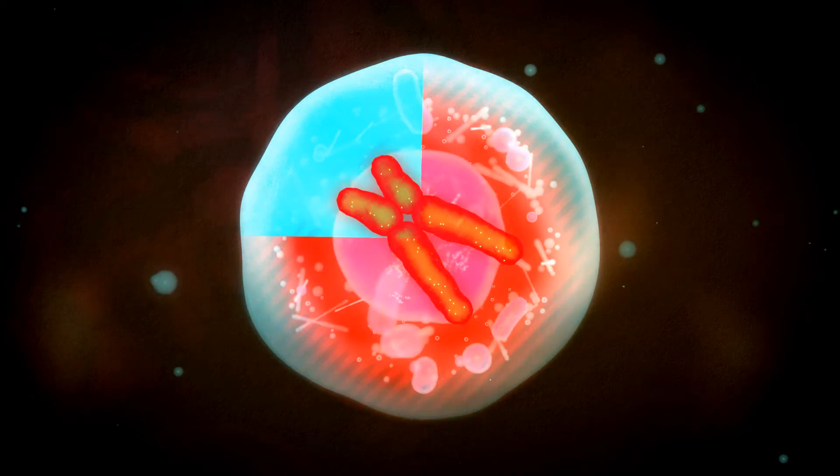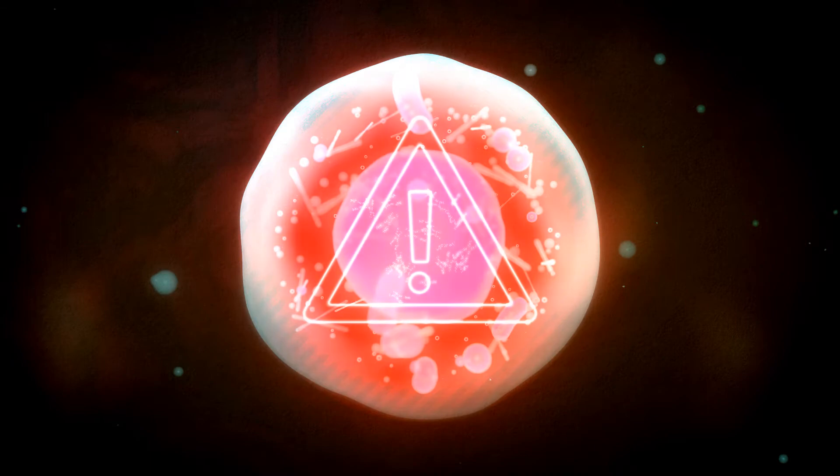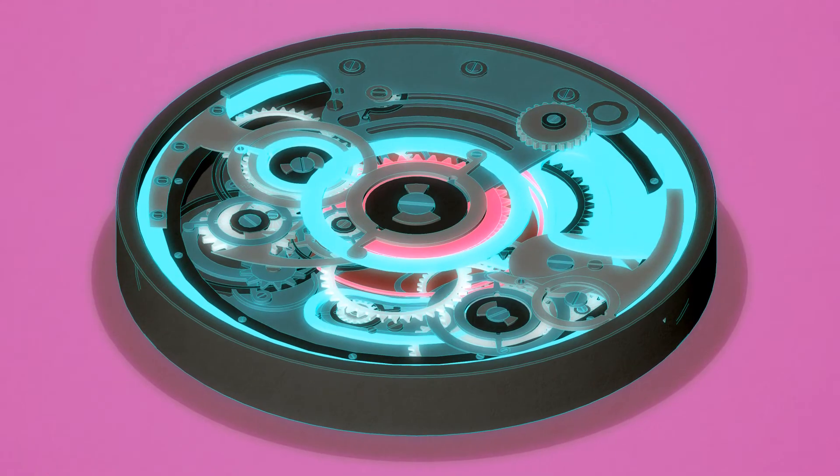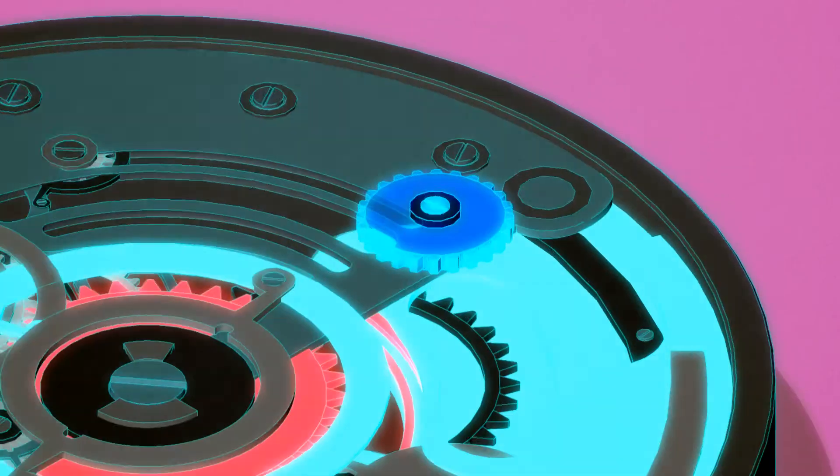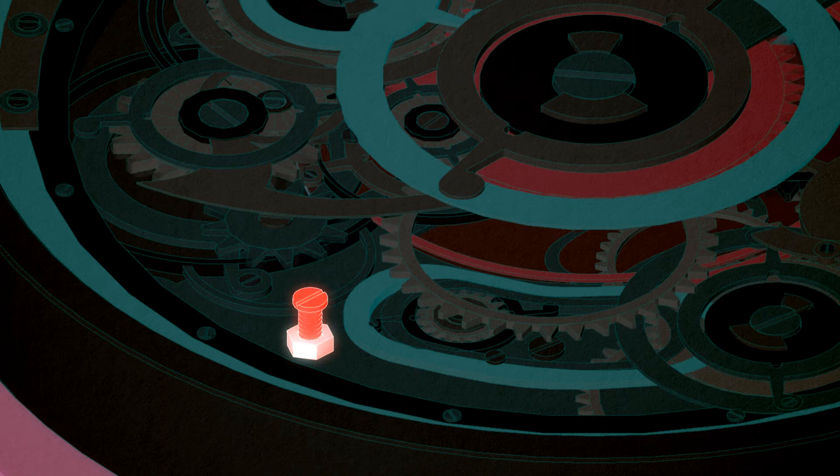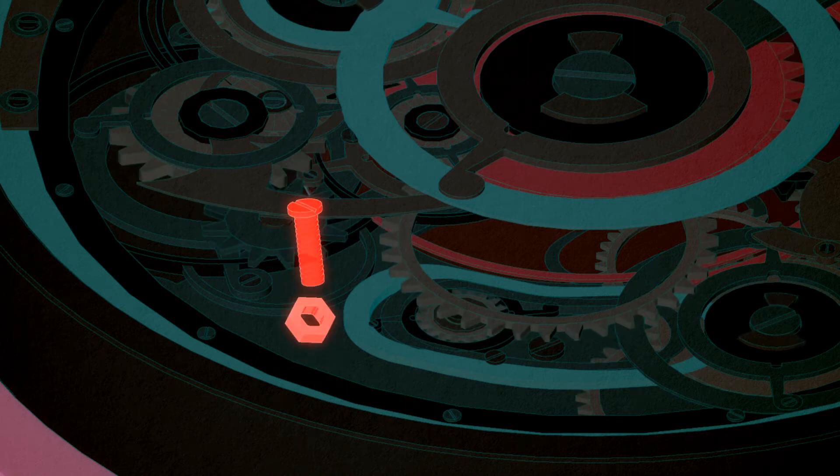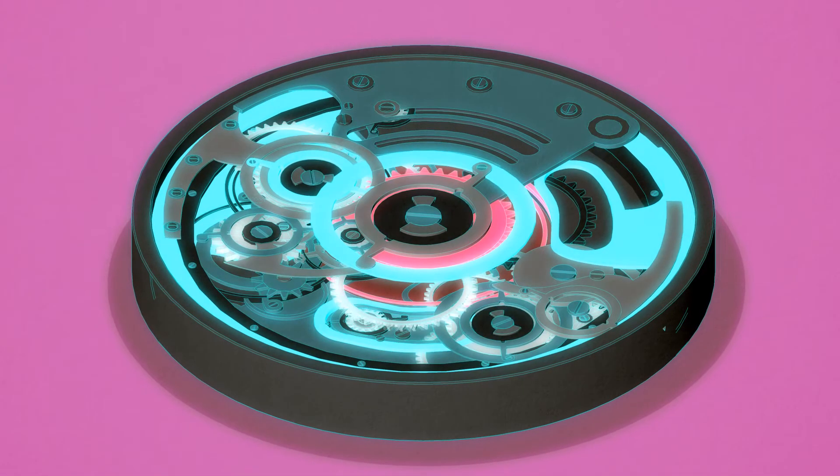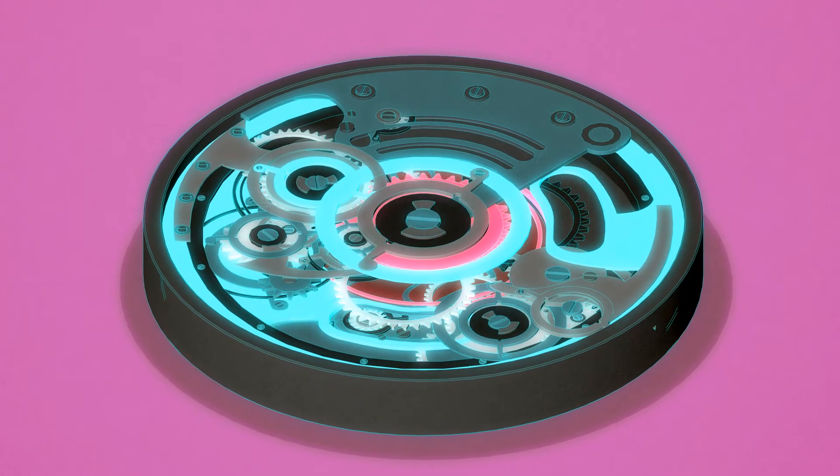Either way, aneuploidy has a negative effect on any cell. Let's go back to the machine metaphor. The extra oncogenes provide the machine with extra power and loss of some tumor suppressor genes takes away some emergency brakes. However, the rest of the machinery is not prepared for these new conditions.